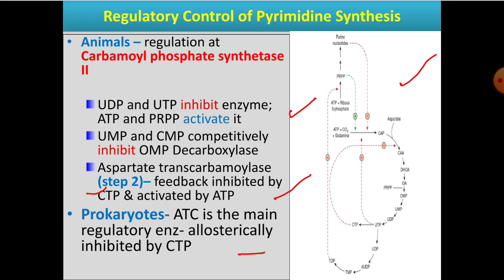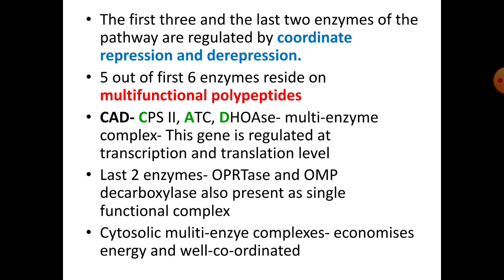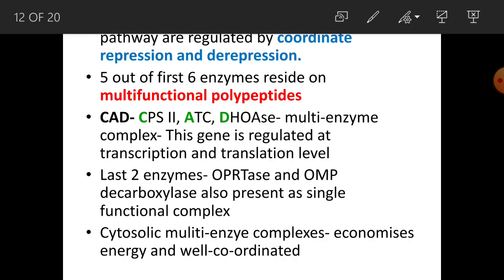Additionally, the first three and last two enzymes of the pathway are regulated by coordinate repression and derepression — meaning at the genetic level, transcription of their specific genes is inhibited or allowed. If repression is lifted, it is called derepression.